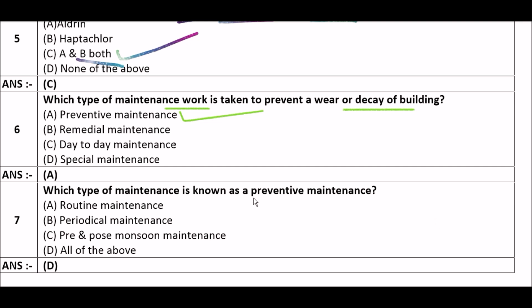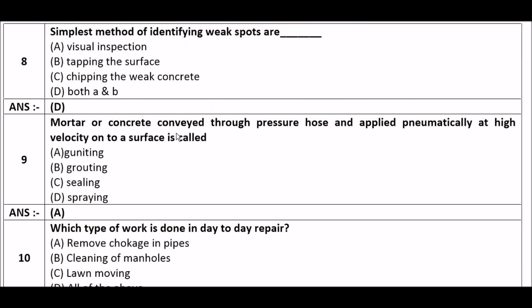Next question: Which types of maintenance are known as preventive maintenance? Option A: routine maintenance, option B: periodical maintenance, option C: pre and post monsoon maintenance, option D: all of the above. The right answer is option D — all of the above. Routine maintenance, periodical maintenance, and pre and post monsoon maintenance are all known as preventive maintenance.